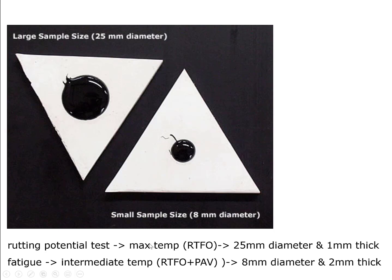Because rutting is a main concern when the temperature is high, the rutting potential test is performed at the maximum temperature, and the fatigue potential test is performed at the intermediate temperature. The sample for the rutting potential test is 25 mm in diameter and 1 mm thick, and the sample for the fatigue potential test is 8 mm in diameter and 2 mm thick.